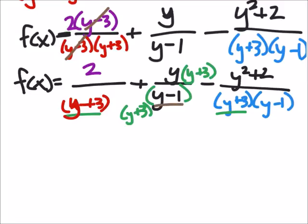Next let's look at y minus 1. This first term doesn't have a y minus 1 so I'm going to put that in there. That's y minus 1. So I need to multiply the 2 by y minus 1 as well. And the third term does have it.